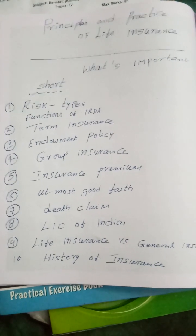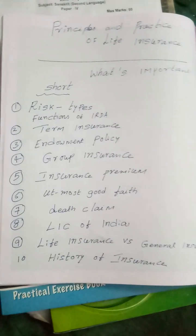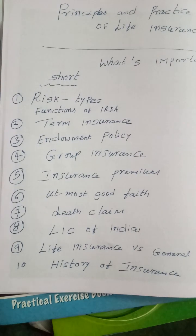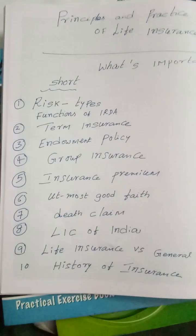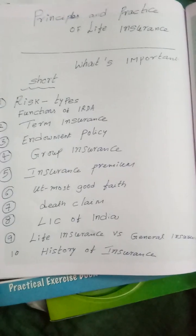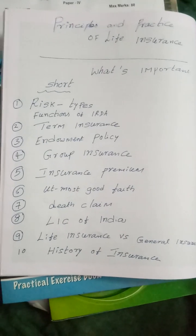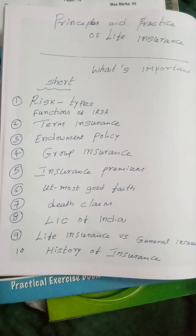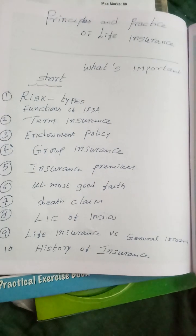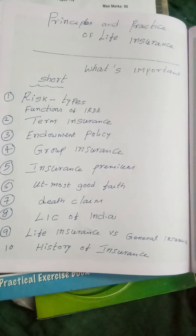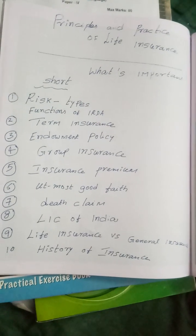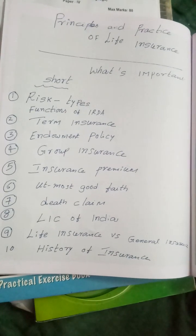The principles and practice of life insurance is the 80 marks paper. I will give you the 80 marks paper. Learning of insurance is very much important because human beings are having risk and uncertainty, so people will prefer to go for insurance. Transferring of the risk of individuals to the company is known as insurance. It is an agreement between insurer and insured.